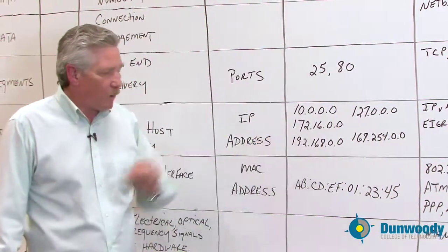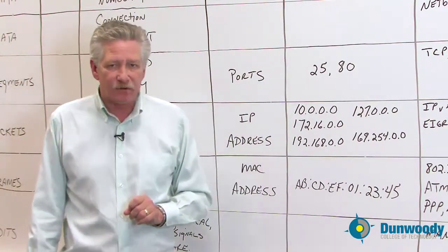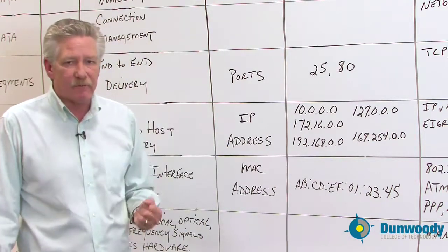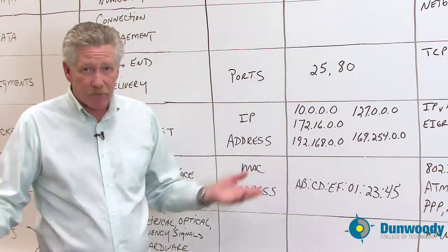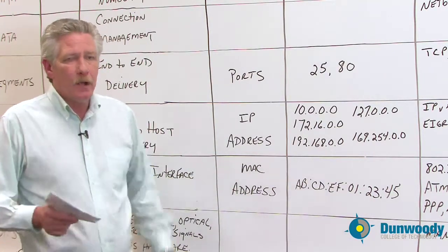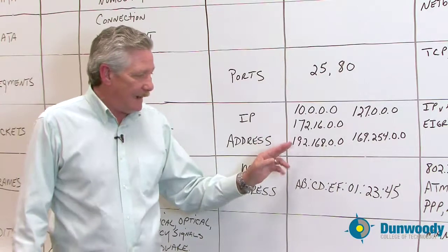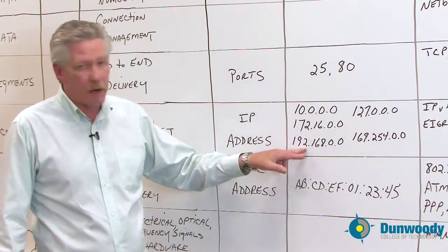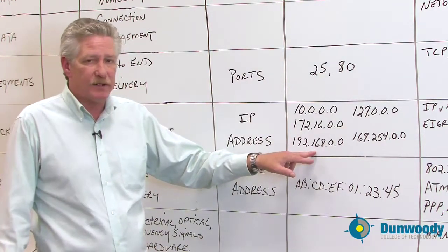The 10, the 172, and the 192 are what are known as private addresses. They're only used inside of a business or home. If you have a home cable modem or DSL modem, you're probably using on the inside address the 192.168, unless you've gone in and changed the defaults.